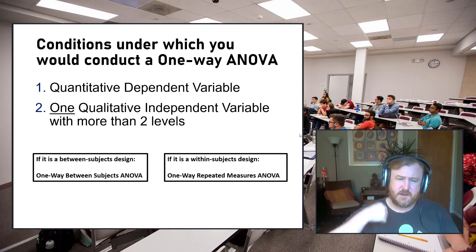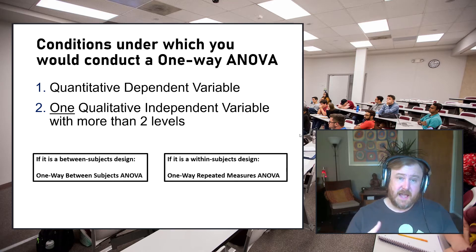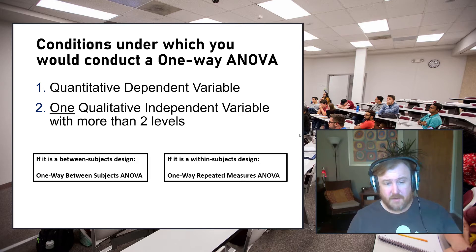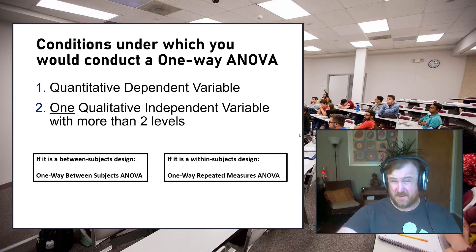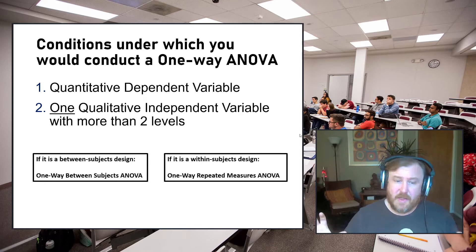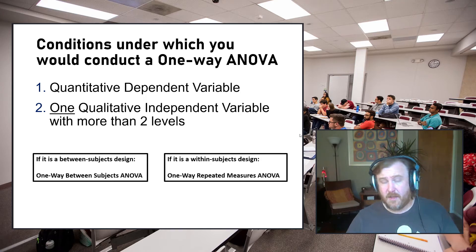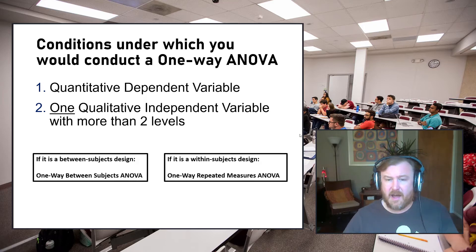You'll know it's a between-subjects design if different people are at each level of the independent variable — for example, group one receives one treatment, group two (different people) receives another, and group three (another set of people) receives a different treatment. That's a between-subjects ANOVA. Alternatively, in a repeated measures design the same people are measured at each level — for example, at baseline, after treatment, and at six-month follow-up — which calls for a one-way repeated measures ANOVA.